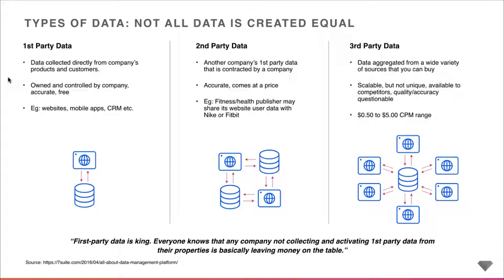Second-party data is essentially another company's first-party data that you may want to contract and use. As an example, it could be data about a fitness or health publisher — audiences interacting on a fitness or health website may be interesting for companies like Nike or Fitbit to target. Because it's another company's first-party data, it is super accurate, but it does come at a price — it needs to be contracted and paid for.